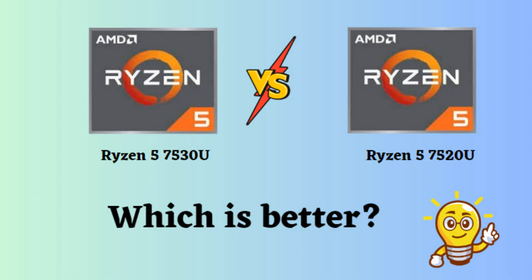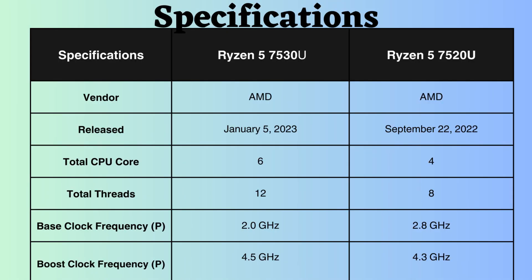In this video, I will compare the AMD Ryzen 5 7520U and AMD Ryzen 5 7530U, highlighting their differences and then provide a conclusion to help you determine which one is the better choice. Both of these processors are from AMD, having their unique strengths and weaknesses. Let's delve into their features.